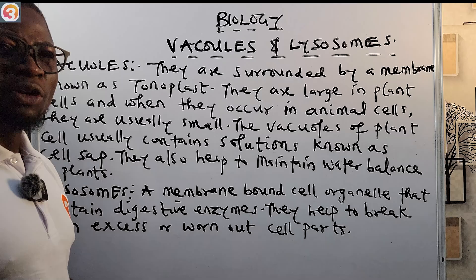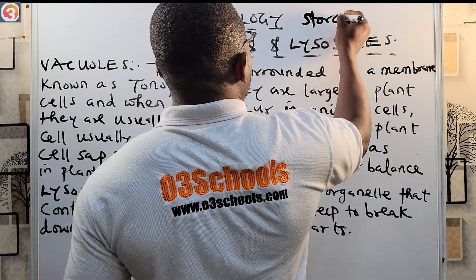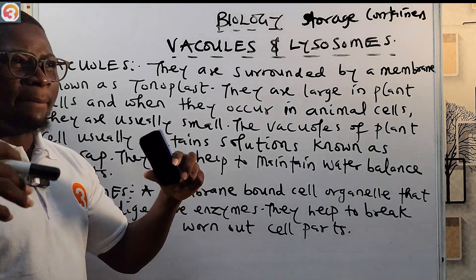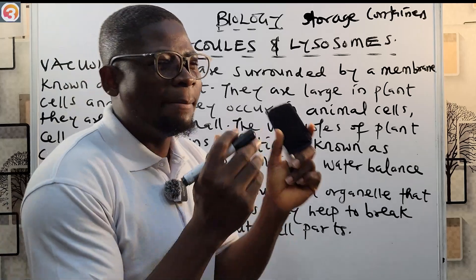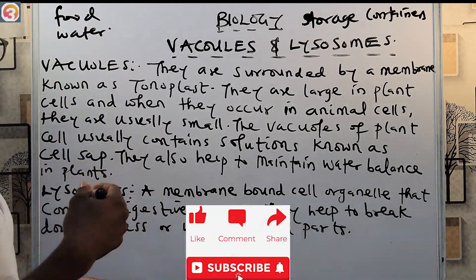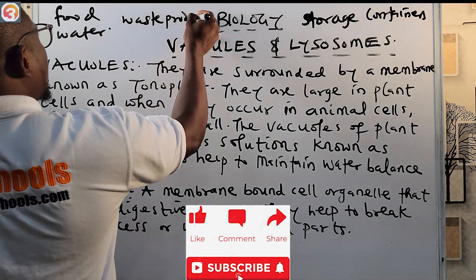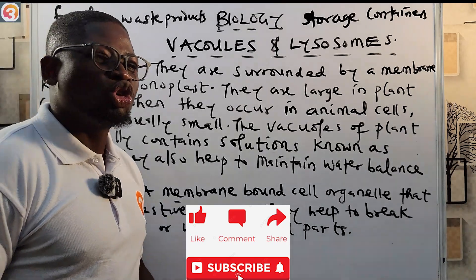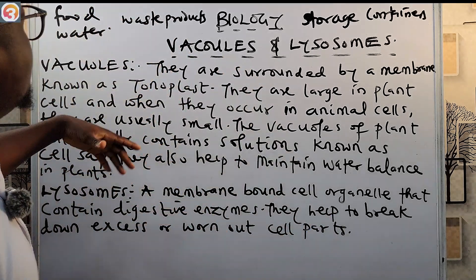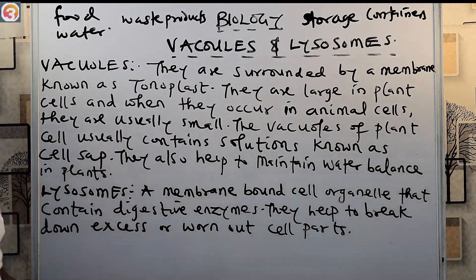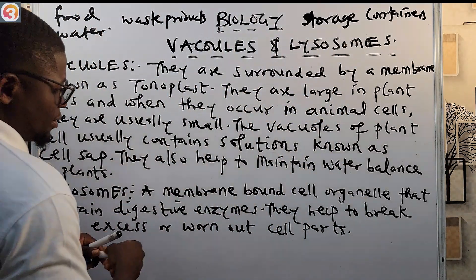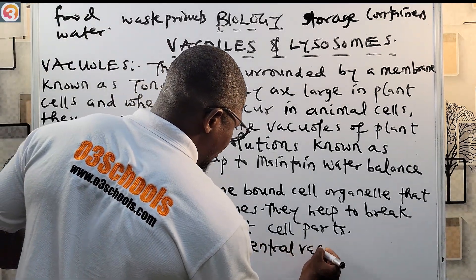Now let's talk about the vacuoles. Vacuoles are basically what you call storage containers. They are a membrane-enclosed area that stores food, stores water, stores waste products, and many other things. So they are storage containers — a membrane-enclosed area that stores food, water, waste products, and more. An example is the central vacuole found in plant cells.